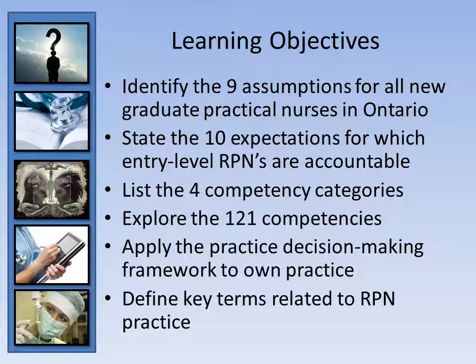The purpose of this lecture PowerPoint is to review the Entry to Practice competencies for Ontario RPNs and to help you understand how these apply to you. The learning objectives are to identify the 9 assumptions for all new graduate practical nurses in Ontario, to state the 10 expectations for which entry level RPNs are held accountable, to identify and list the 4 competency categories, to explore the 121 competencies, to apply the decision-making practice framework to one's own practice, and to define key terms related to RPN practice.